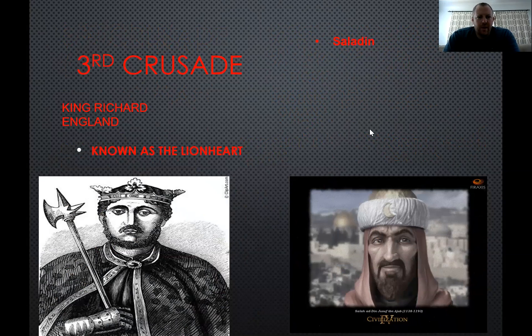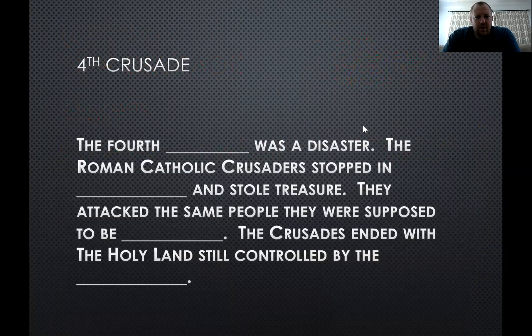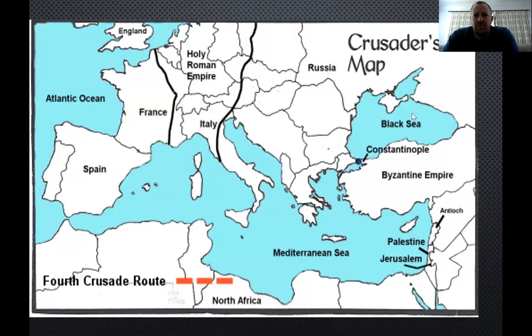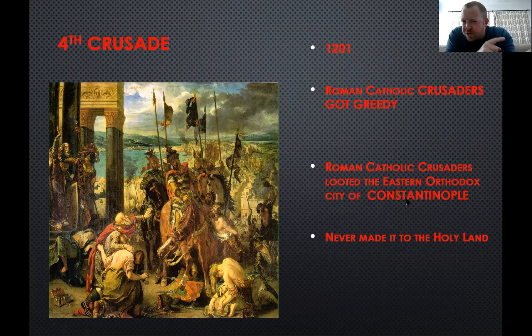In the Third Crusade, it was Richard the Lionheart versus Saladin. Saladin is one of the most revered characters in military history, known for being a kind and very intelligent fighter. In the Fourth Crusade, 1201, Roman Catholic Crusaders got greedy and looted the Eastern Orthodox city of Constantinople — so you have Christians attacking a Christian empire. After this, there are some small Crusades, but none of them are successful and they never make it to the Holy Land.